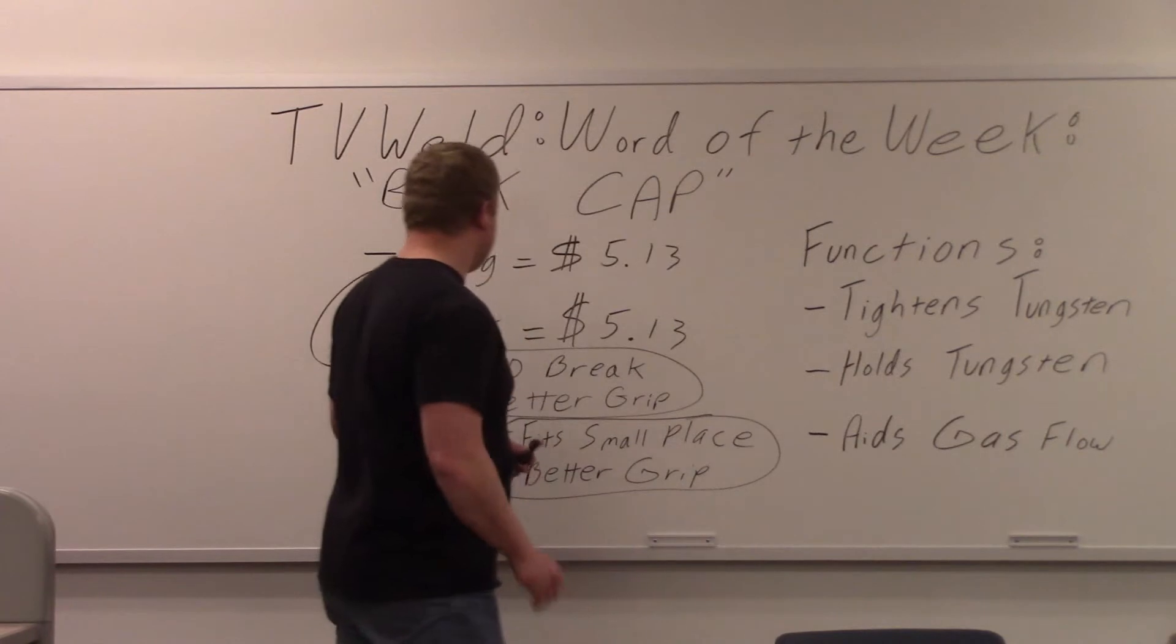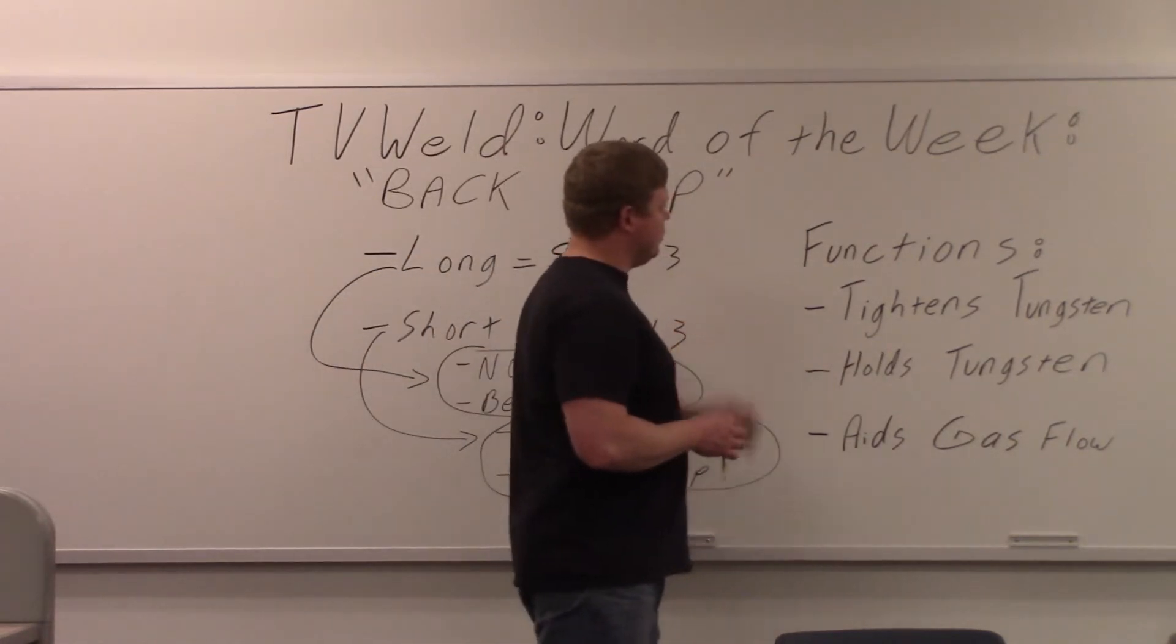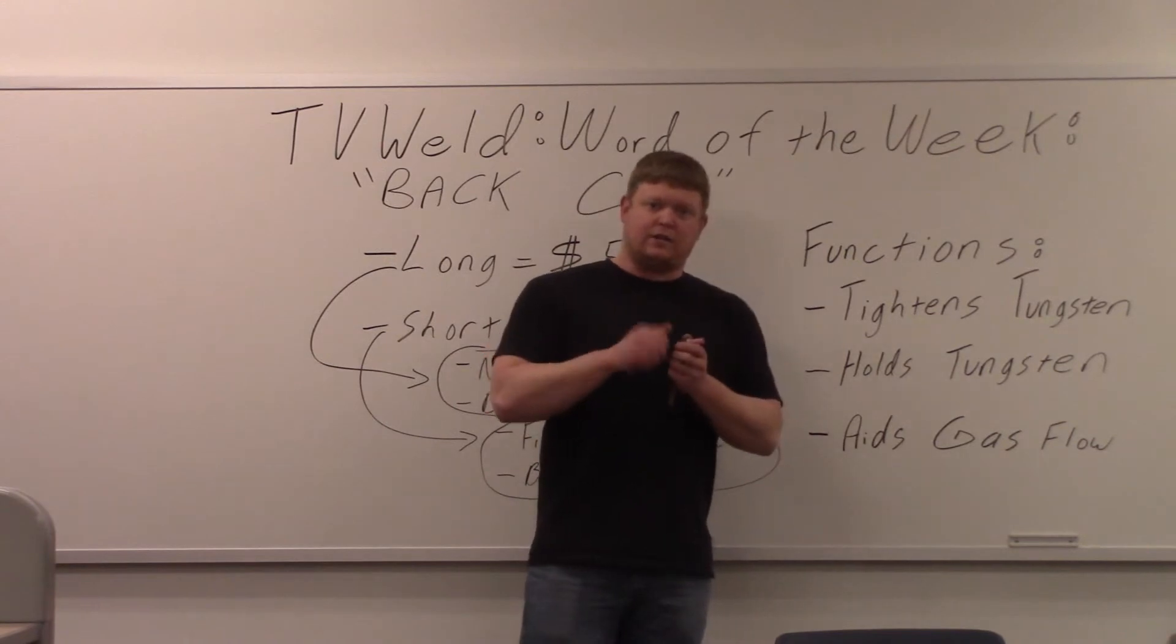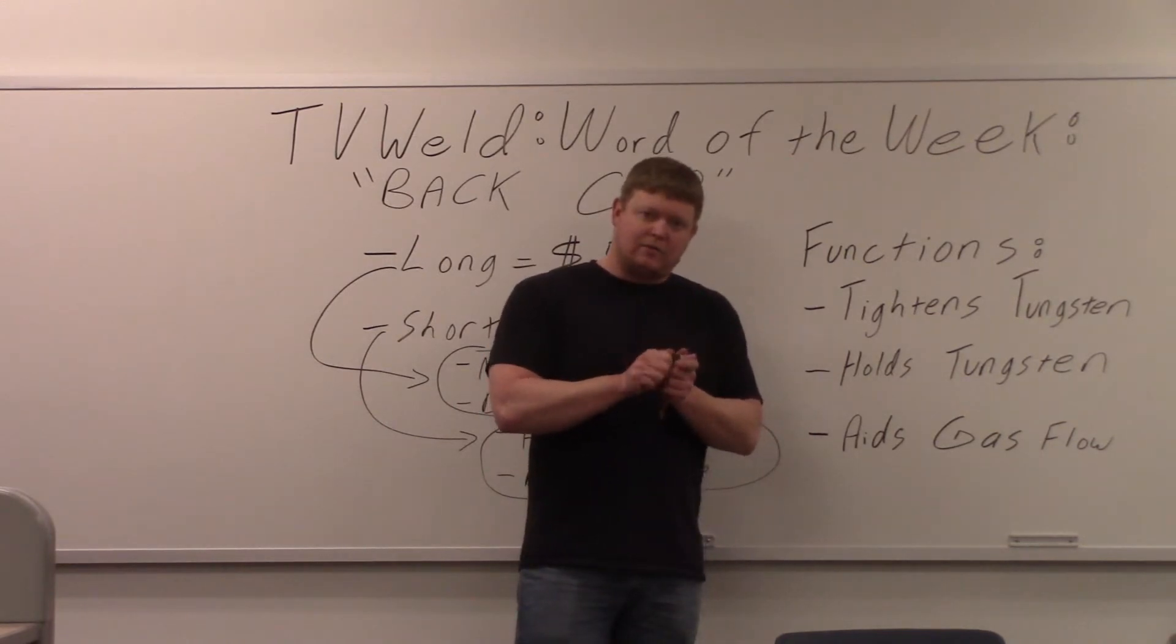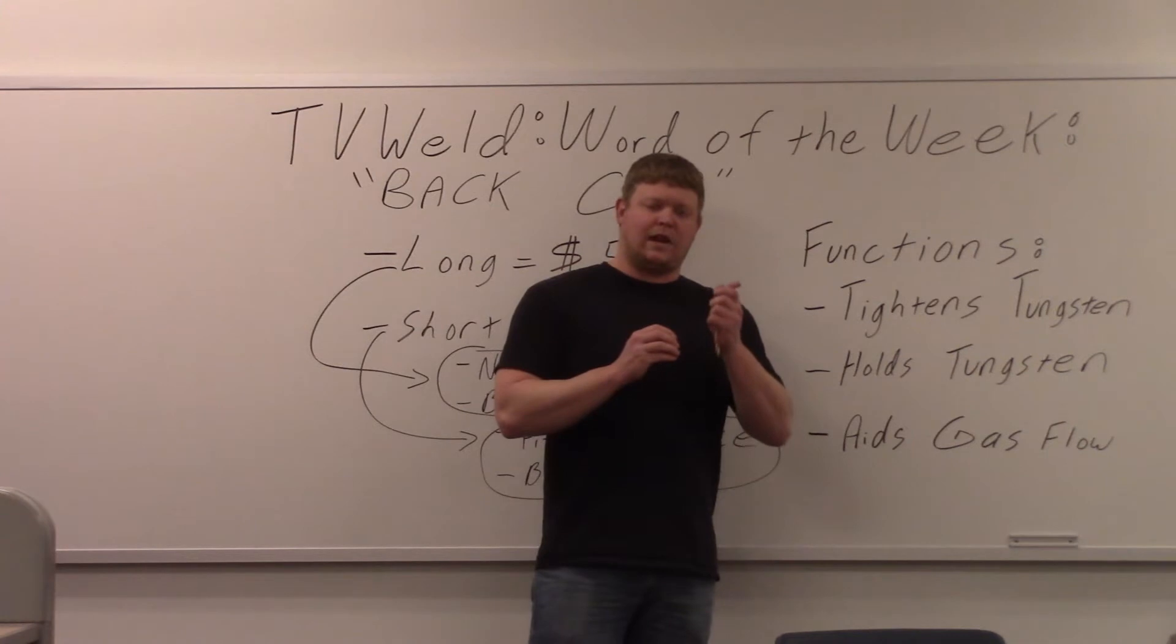So functions, the end cap. Main function: tightens the tungsten. You're going to put the tungsten in there and tighten the end cap. When you tighten the end cap down, it pushes the collet into the collet body and then pinches the tungsten. Its main function is to tighten down on the tungsten.